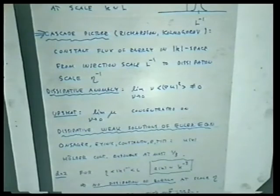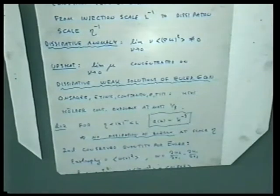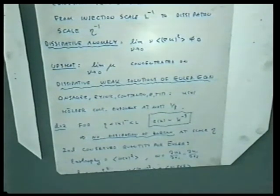Mathematically, as you take viscosity to zero, the stationary measure of the Navier-Stokes equation should be concentrated on dissipative weak solutions of the Euler equation. The Euler equation naively conserves energy — there is no friction — but what you get as Reynolds number goes to infinity should be some invariant measure of the Euler equation sitting on dissipative weak solutions. Heuristically, you should expect velocity to be Hölder continuous with exponent one-third, and it's a theorem in certain cases.